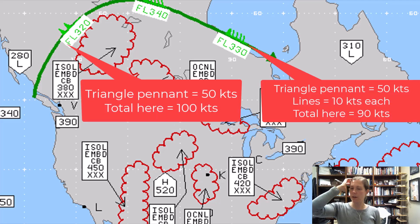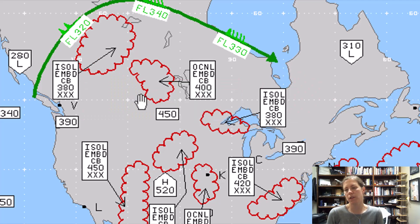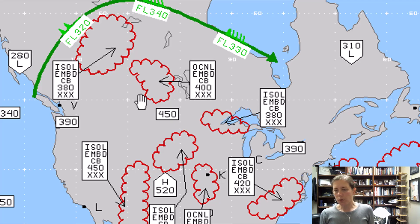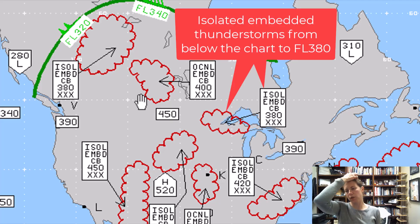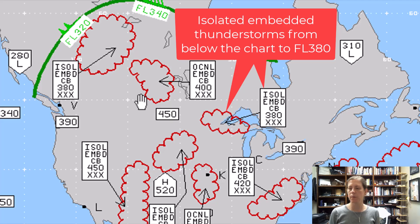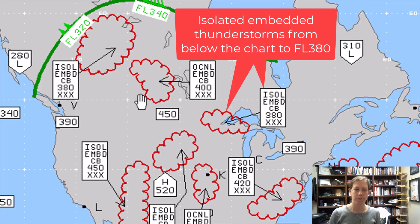There are areas that are bubbled in and they tell us certain things. You can read these almost like plain language. The one over northern Wisconsin, Minnesota, and the upper peninsula of Michigan just says isolated embedded cumulonimbus clouds at 380, and XXX just means it's below the chart.